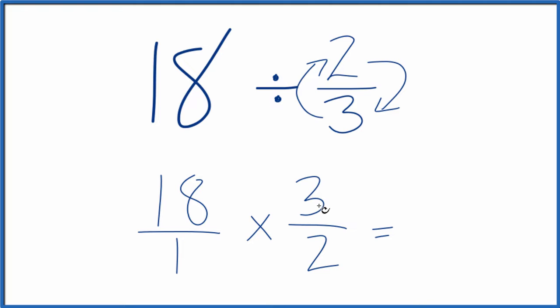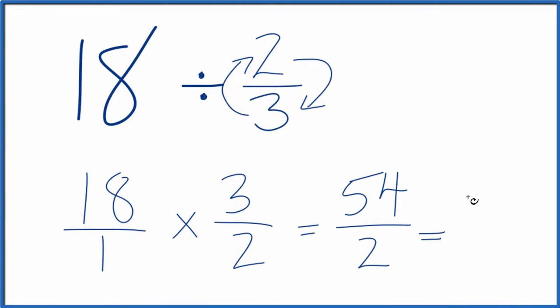18 times 3, that's 54. 1 times 2 is 2. We can reduce this further.